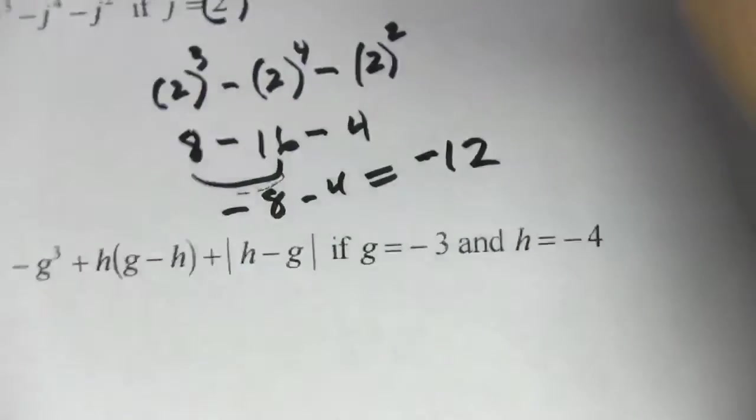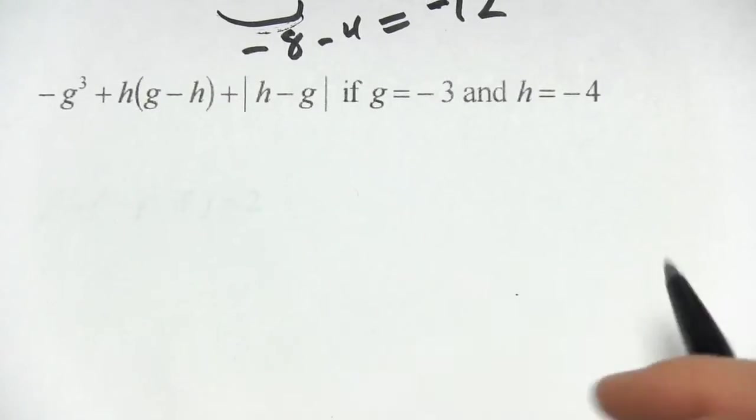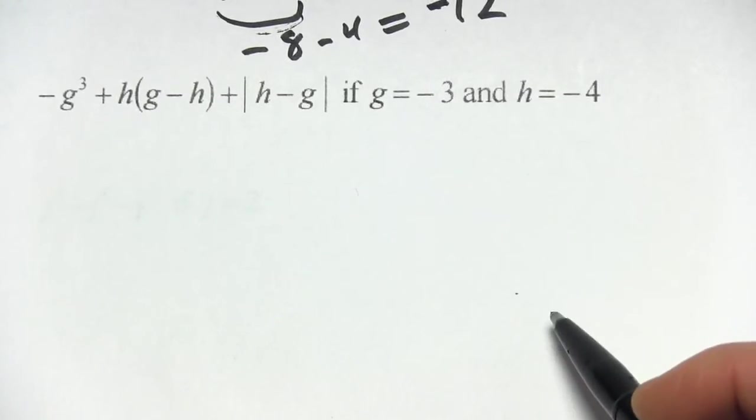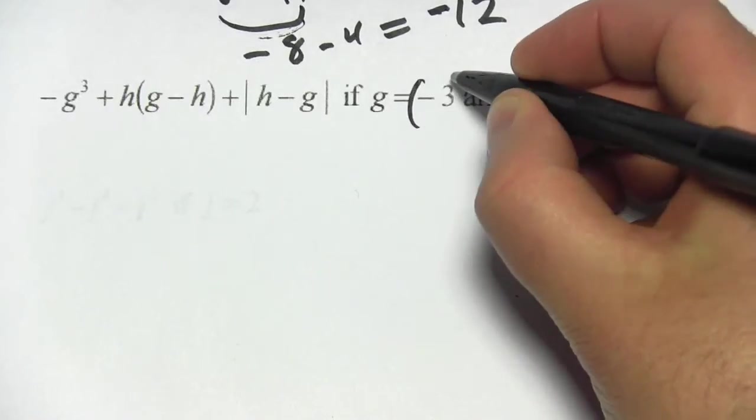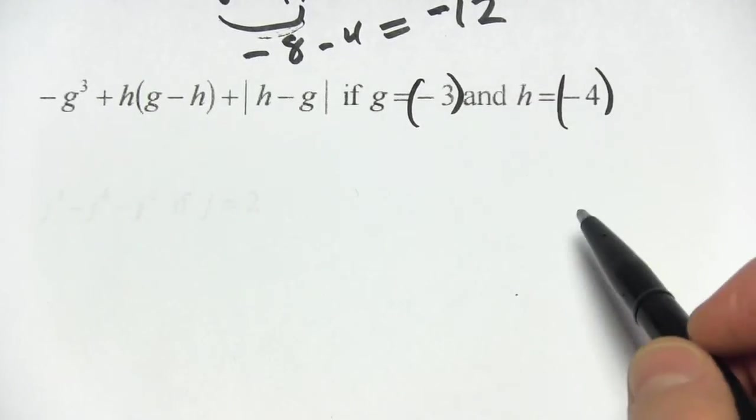Alright, one more. This one is much more tricky, but again if you take it step by step there's nothing we can't figure out here. So again I'm going to use parentheses around our values for h and g and then just start rewriting this problem.